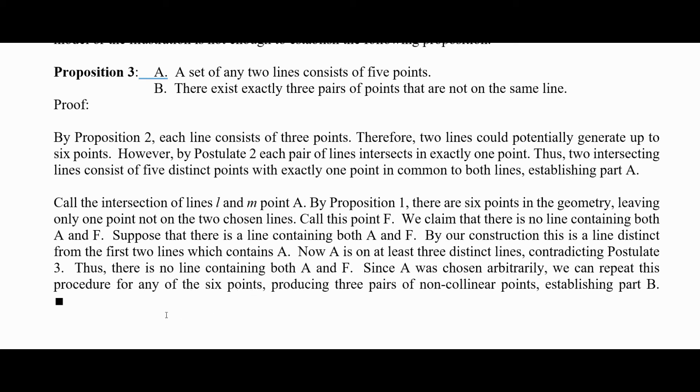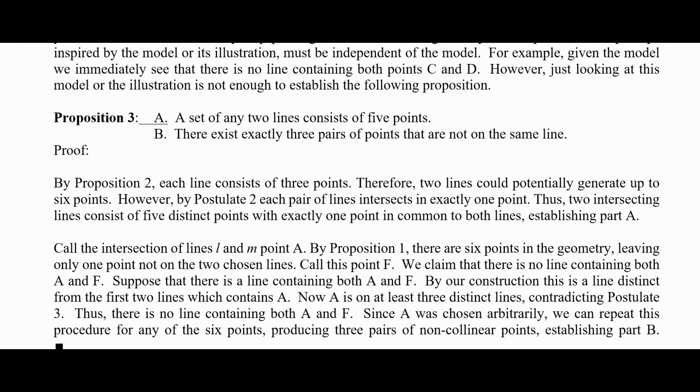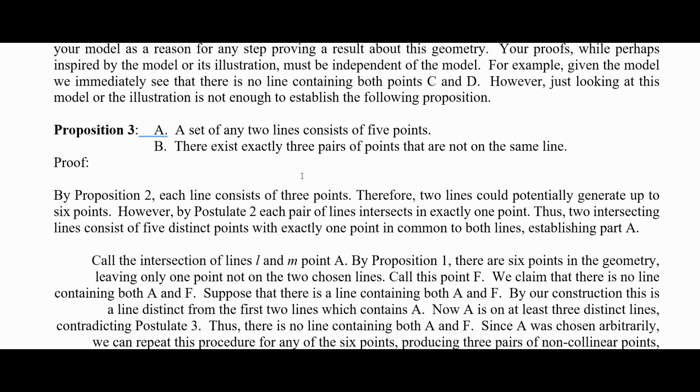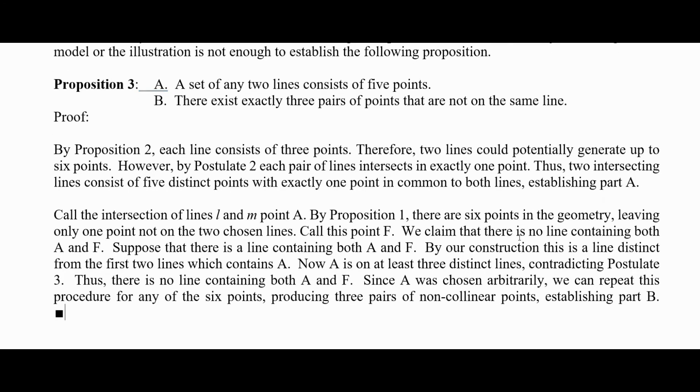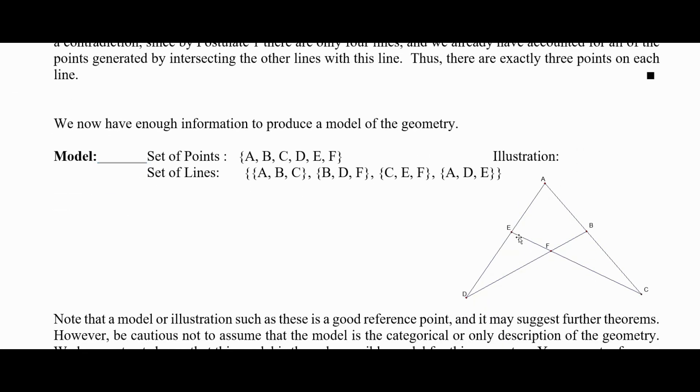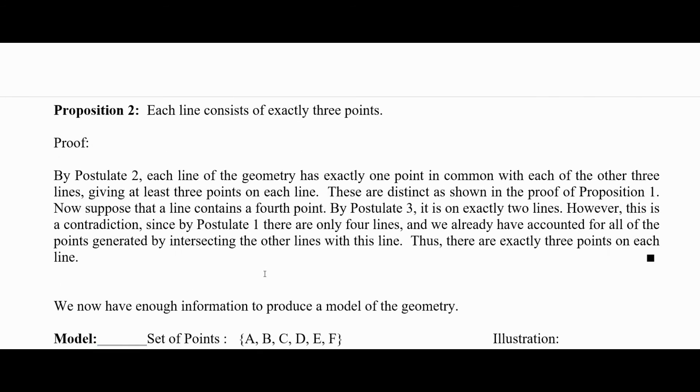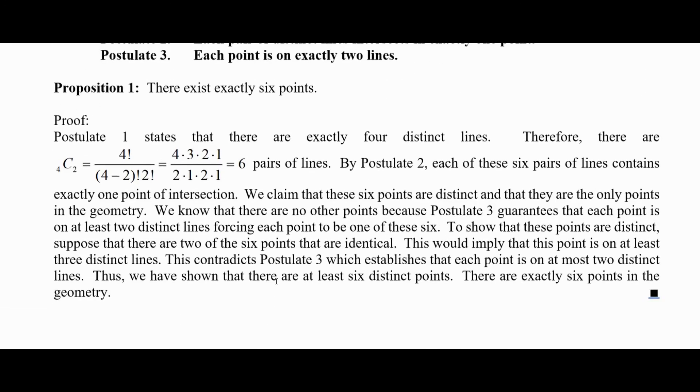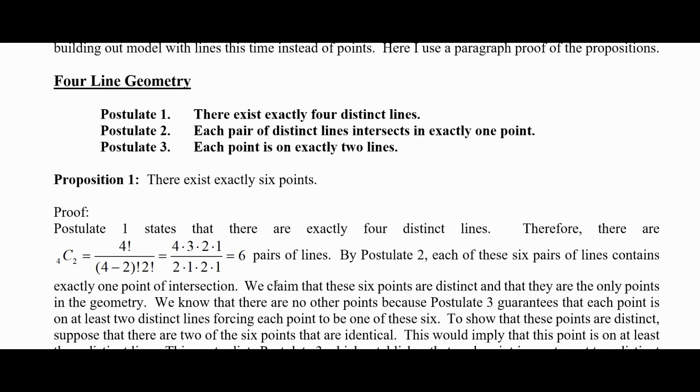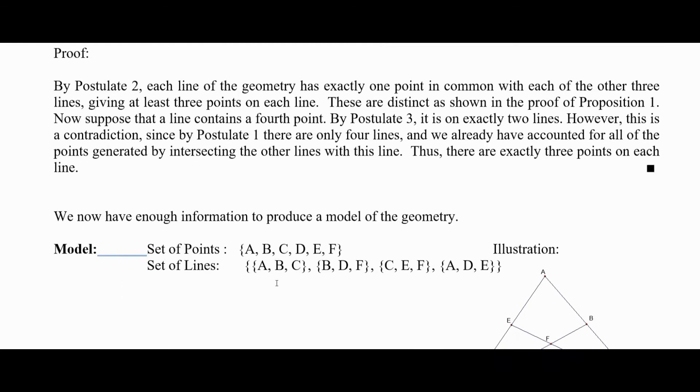Looking at our picture, if we look at the pictures, we can see that A and F are not on the same line, E and B are not on the same line, and D and C are not on the same line. So there's a maybe a little bit interesting geometry with exactly, turns out to have exactly four lines and six points.